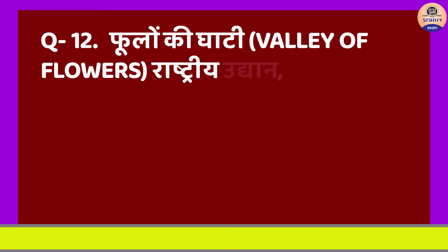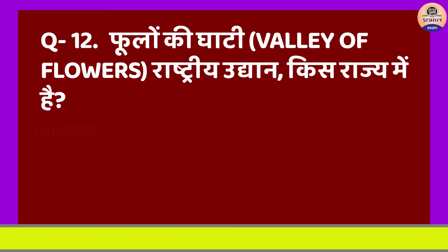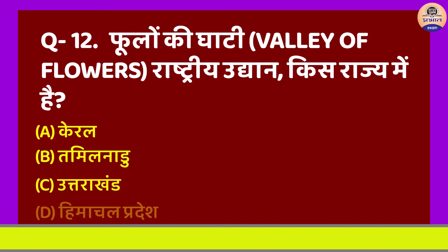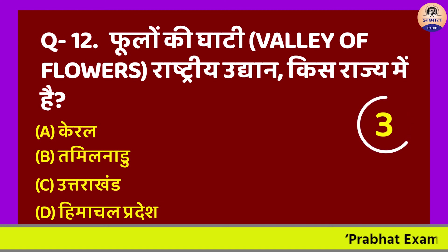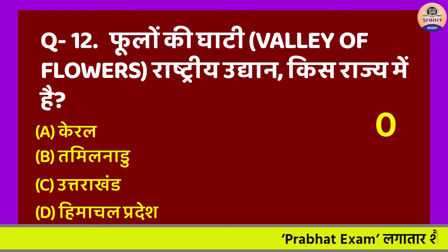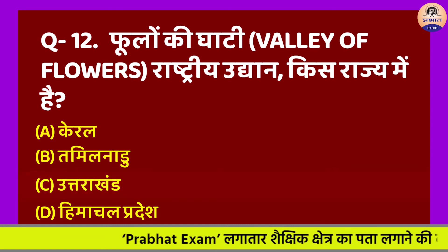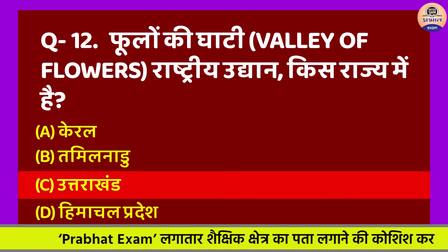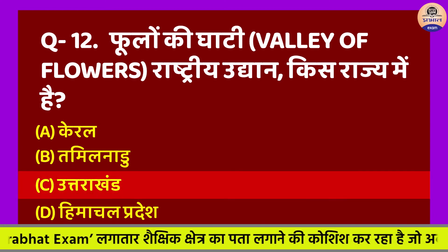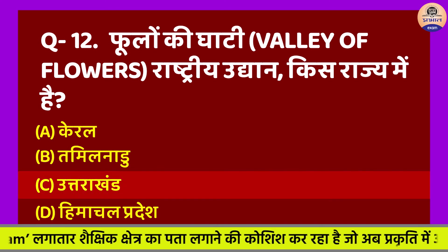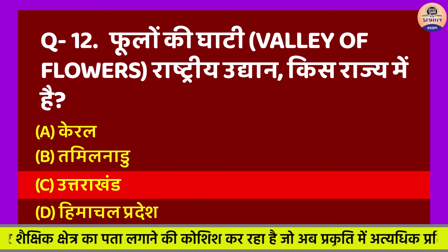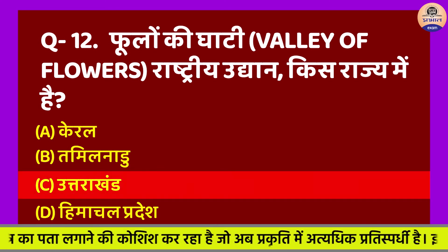Question No. 12: Phoolon ki Ghati - Valley of Flowers National Park - kis rajya mein hai? A. Kerala, B. Tamil Nadu, C. Uttarakhand, D. Himachal Pradesh. Sahi jawab hoga Option C. Phoolon ki Ghati Uttarakhand ke Chamoli zile mein sthit hai. Phoolon ki Ghati National Park ki sthapana 1982 mein ki gayi. Ye 87 varg kilometer kshetrafal mein vyapt hai.